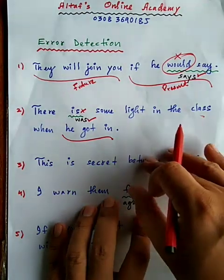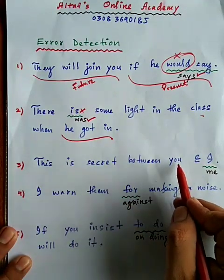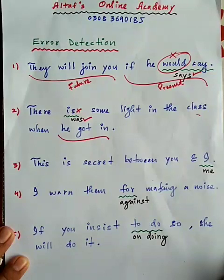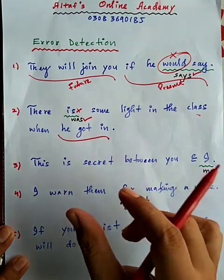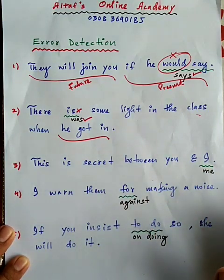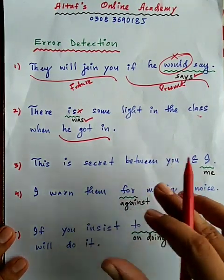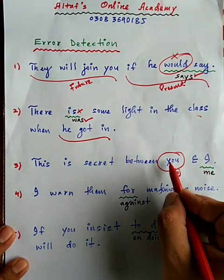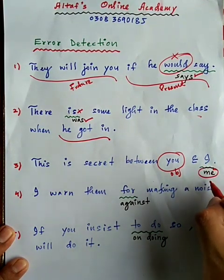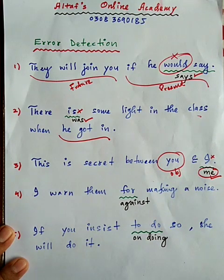تیسرا sentence ہے: 'this is a secret between you and I۔' یہاں you and I نہیں ہوتا۔ Between کے بعد objective form آتی ہے۔ You کی subjective اور objective دونوں you ہی ہے، لیکن I subjective form ہے۔ Between کے بعد objective form 'me' آئے گی، یعنی 'between you and me۔' یہاں I کو غلط استعمال کیا گیا ہے۔